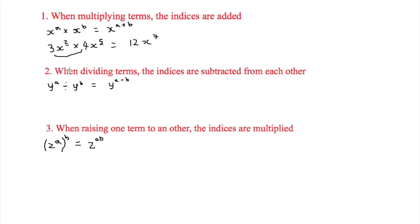So the next step is when dividing terms the indices are subtracted from each other. So the example here is y to the a divided by y to the b is equal to y to the a minus b. So again I'm going to add some numbers in here to see how that looks.